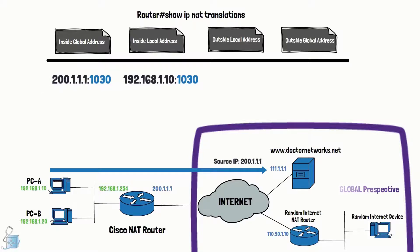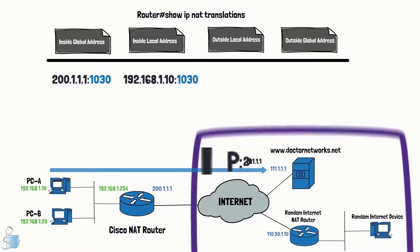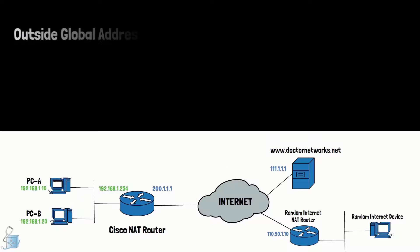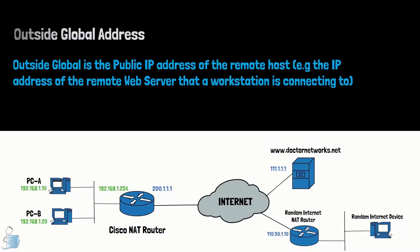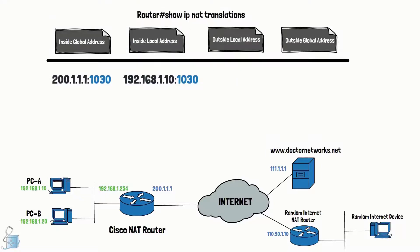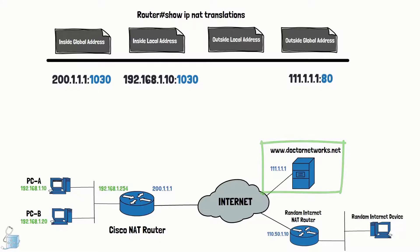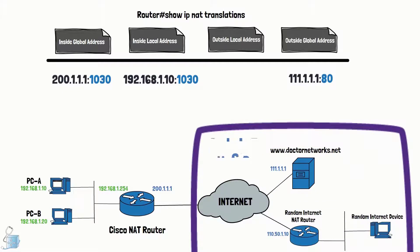The outside global address is the public IP address of the remote host — for example, the public IP address of the remote server that a workstation is connecting to. In our example, it will be the public IP address of the web server hosting drnetworks.net. It is physically outside your organization, and from the global perspective they see that IP as 111.1.1.1.